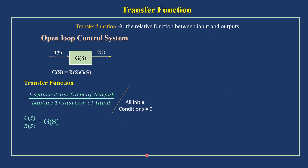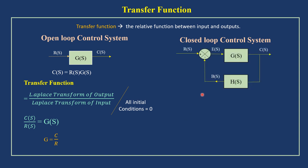Now let me derive for the closed-loop control system. It includes the process and feedback control system. G of S represents the open-loop system gain. In the closed-loop control system, the feedback element measures the output and feeds it back to the comparator — also termed the summing point. Here I have represented the negative feedback control system. H of S is the feedback system gain. C of S is the Laplace transform of output, E of S is the Laplace transform of error output, and B of S is the output signal flow of the feedback element.